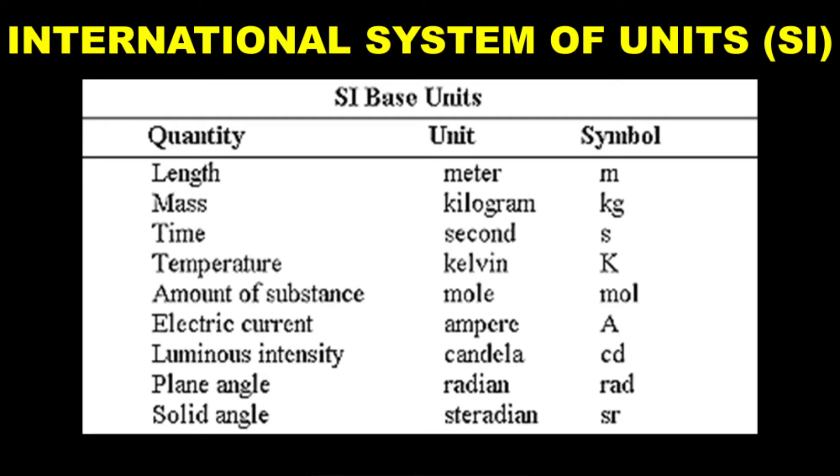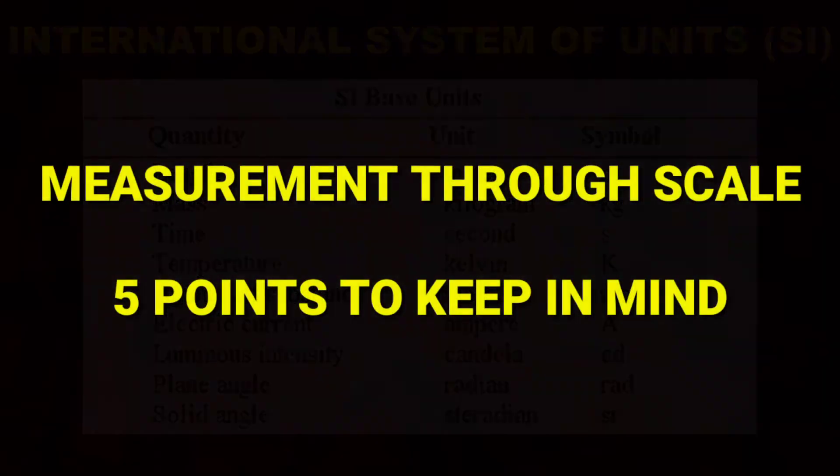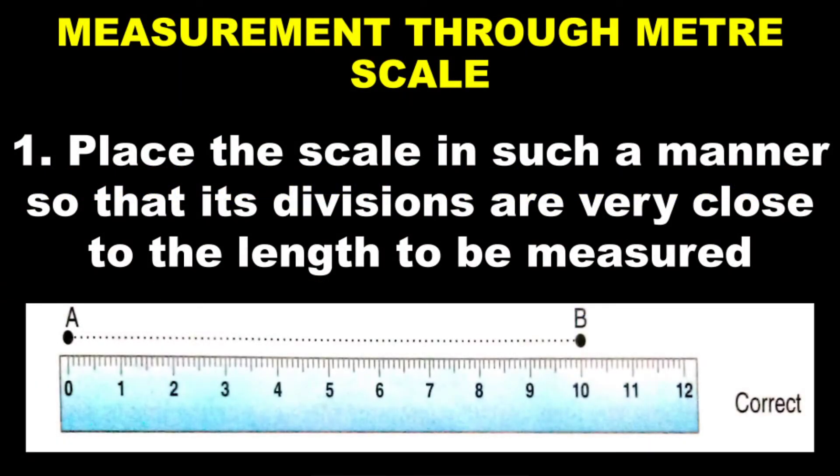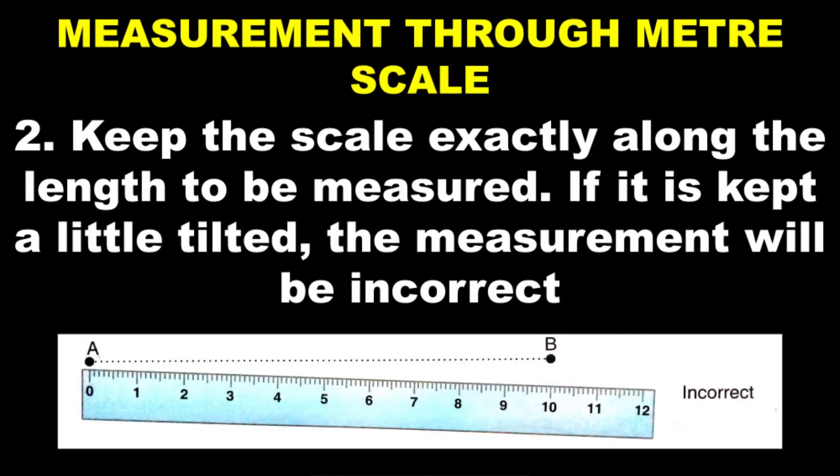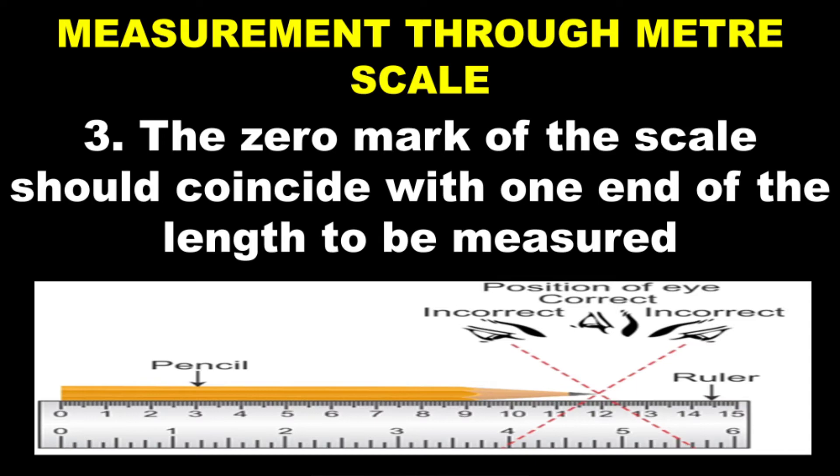If you want to measure anything with the help of your measuring scale, there are five points. First one, the scale should be in a straight position, ek dam seedha hona chahiye. Second, if the scale is tilted, jhuka ho neiche, that is incorrect. Third point children, anything which you have to measure, you have to put the zero of the scale from the beginning of the substance. Ek dam zero pe rakke, aapko naapna padega.